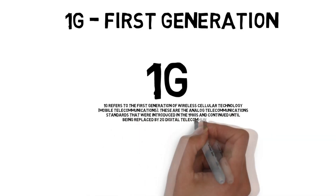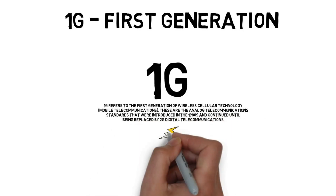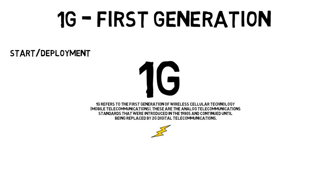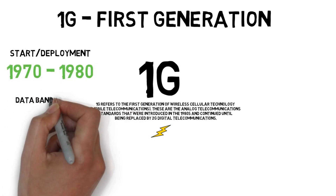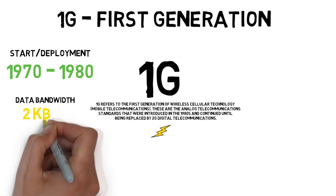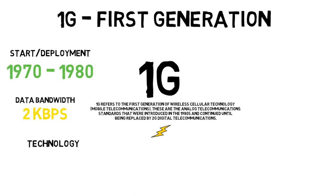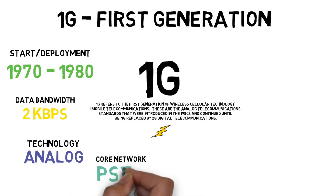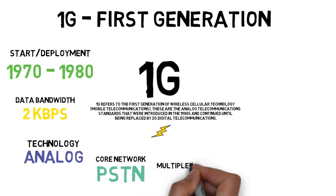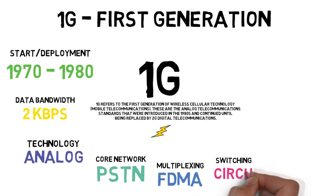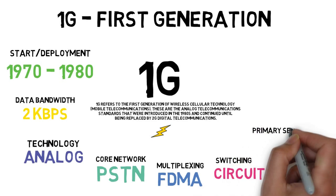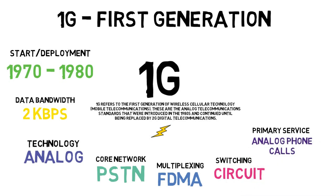1G refers to the first generation of wireless cellular technology. These are the analog telecommunication standards that were introduced in the late 1980s. The data bandwidth is 2 kbps and the technology used is analog. The core network is PSTN while the multiplexing is FDMA. The switching technique used is circuit switching.